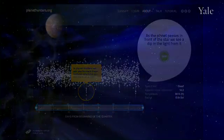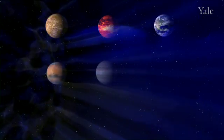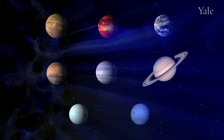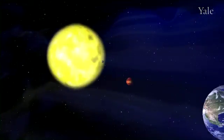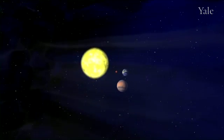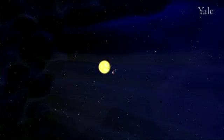In our solar system there are eight planets that orbit our star, the Sun. We've been detecting planets orbiting other stars as well. Since 1995, more than 500 planets have been found orbiting other stars.